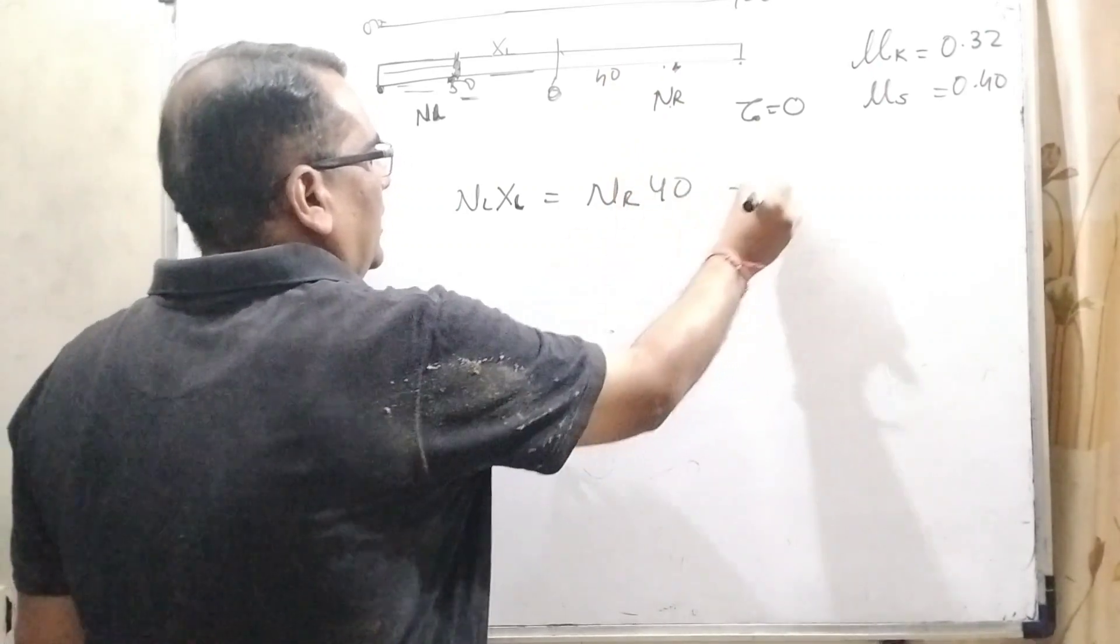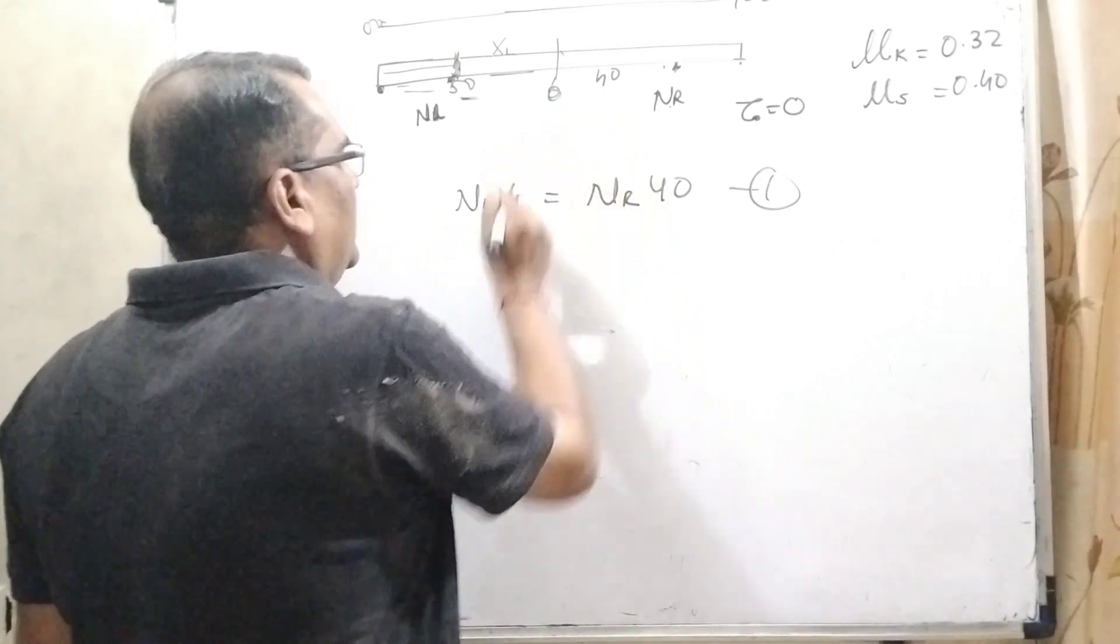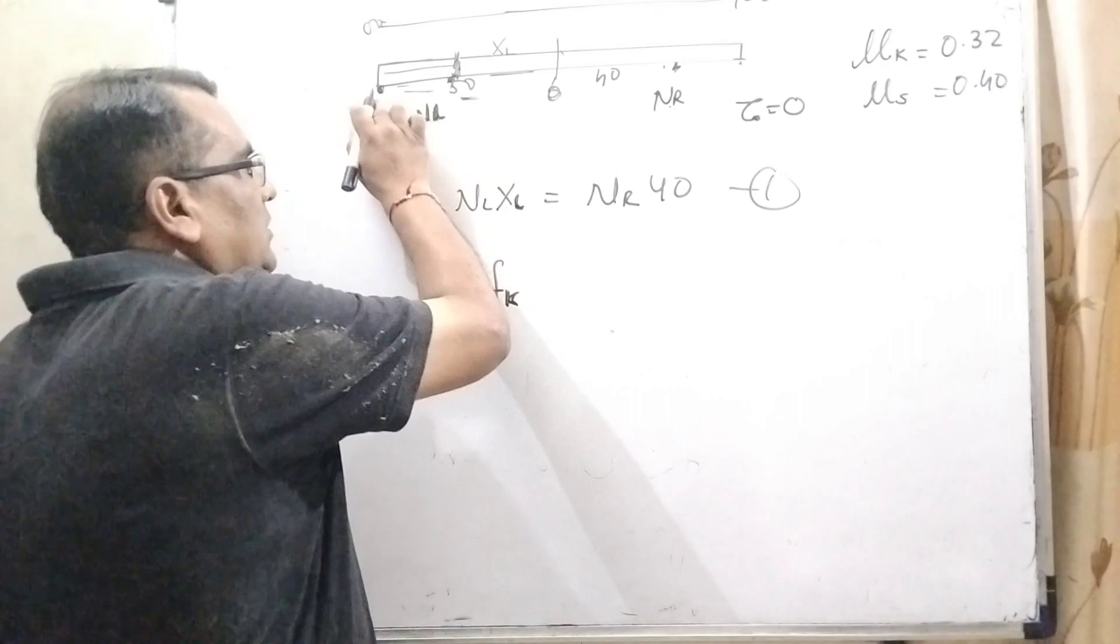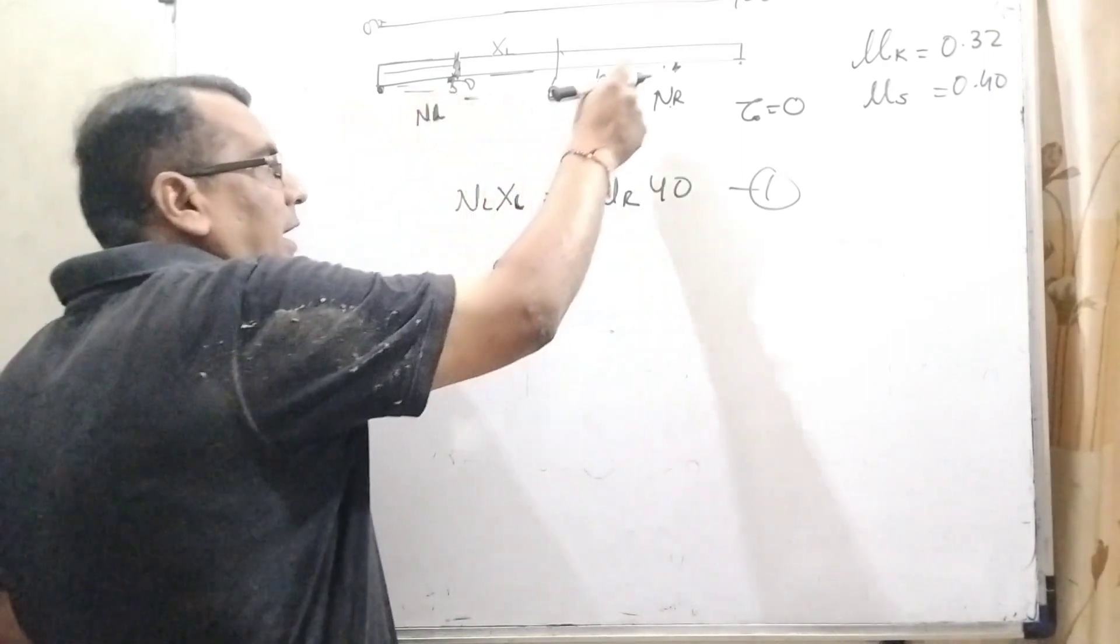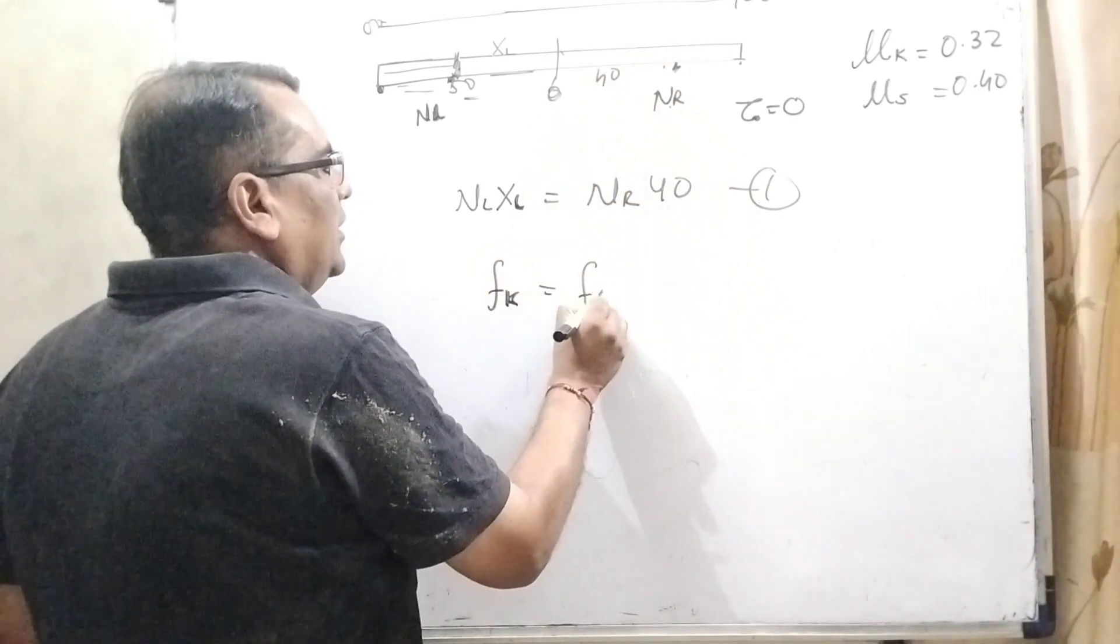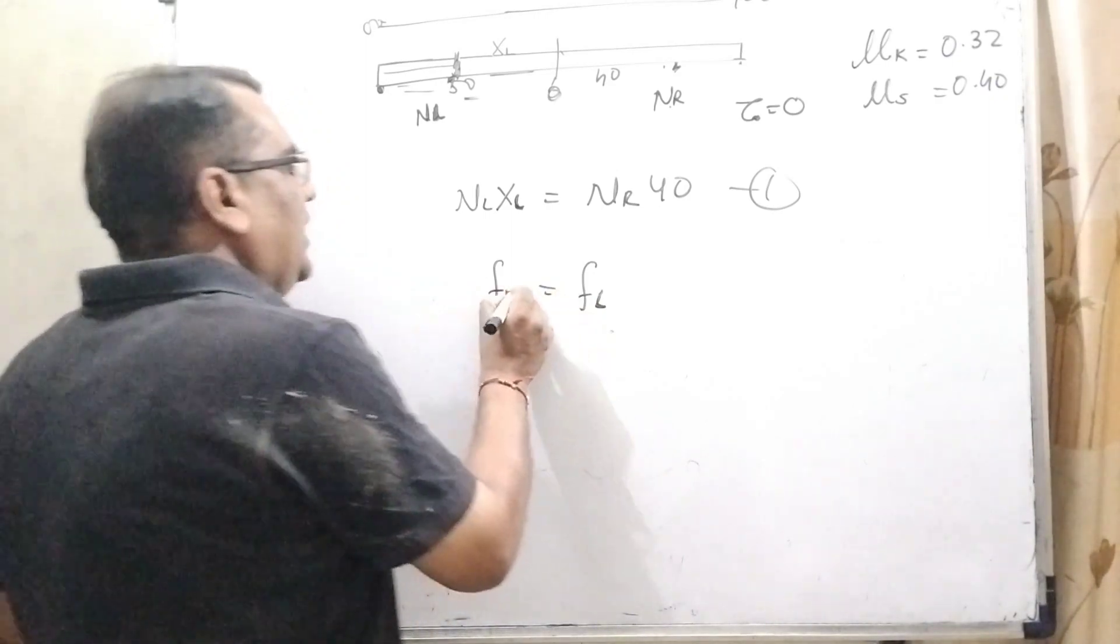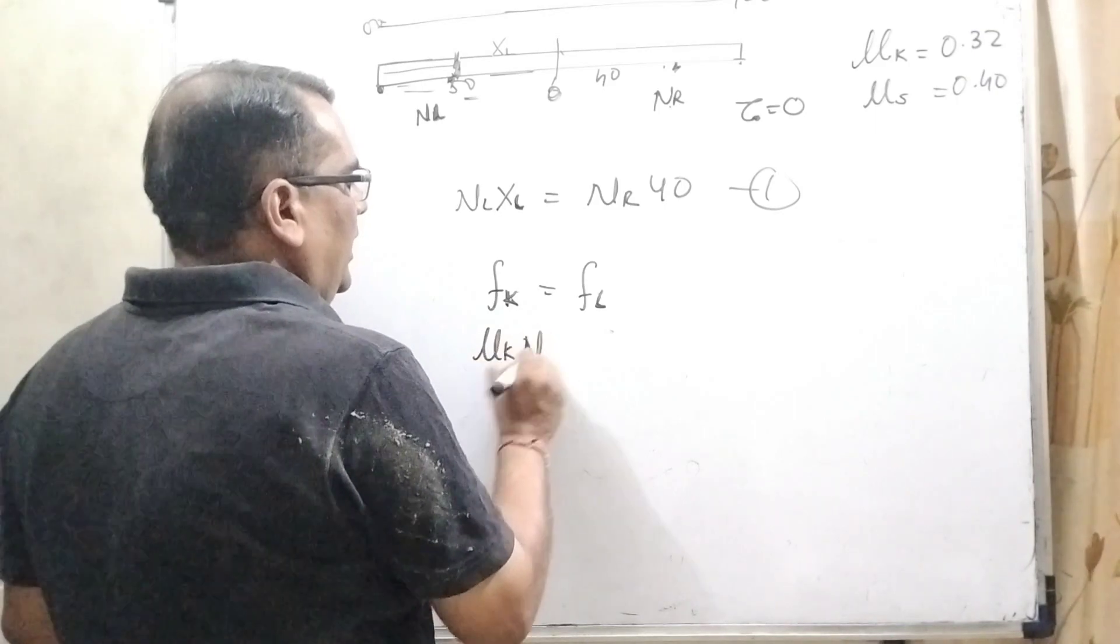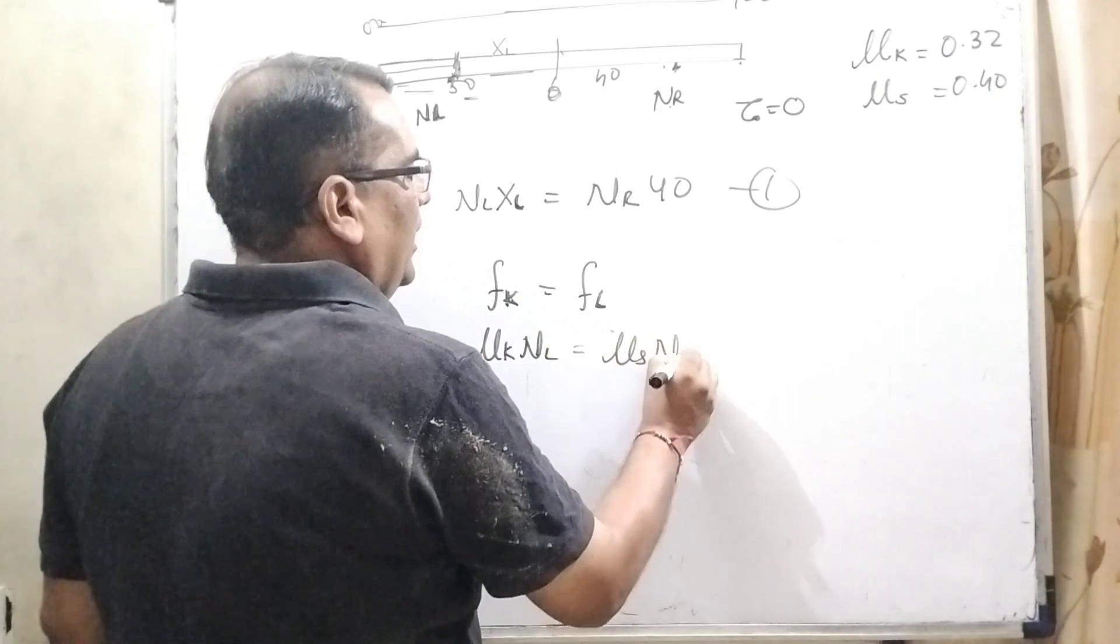Okay, it is the first condition. Now for the second condition, you know that here the frictional kinetic force, because the finger is moving and just stops here, and at that time it will move. It means that limiting friction and here the kinetic friction are the same. So in that case, μK × NL = μS × NR.